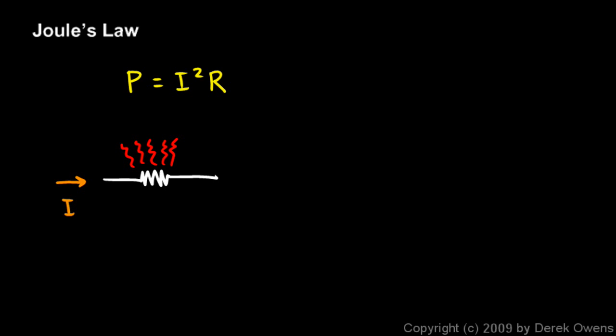And Joule said that the power dissipated by a resistor is proportional to the square of the current. And you see that in the equation. There's the I squared. The power depends on the square of the current I.